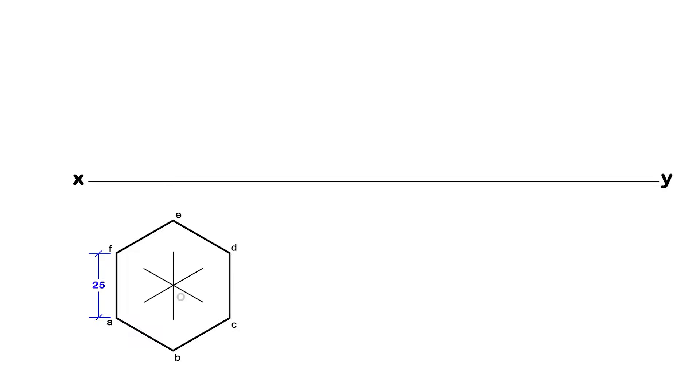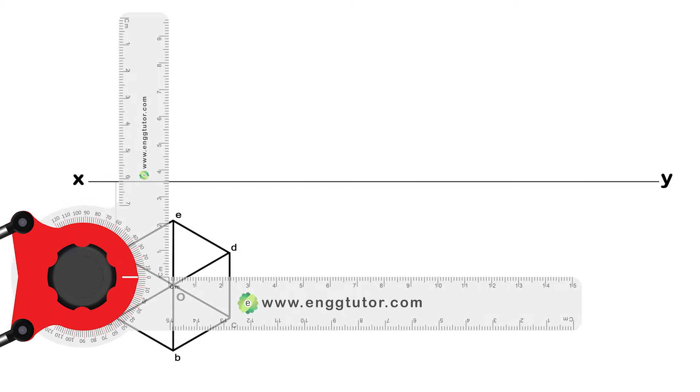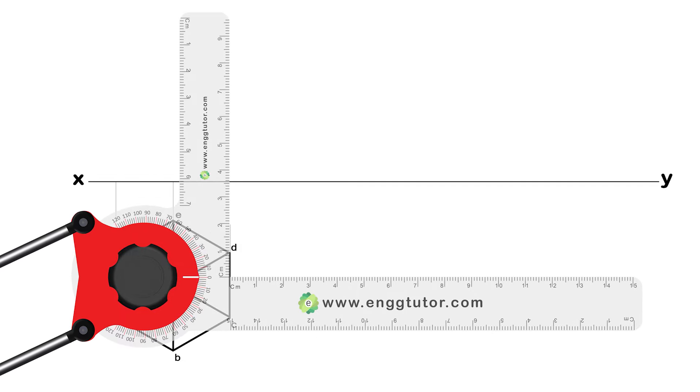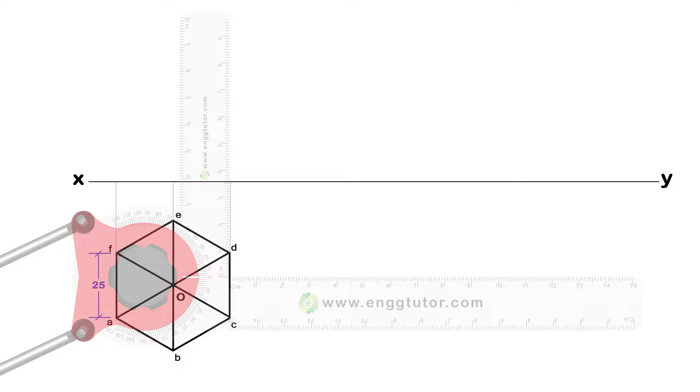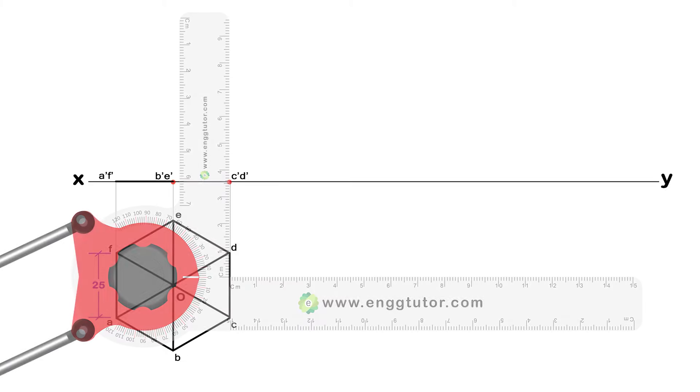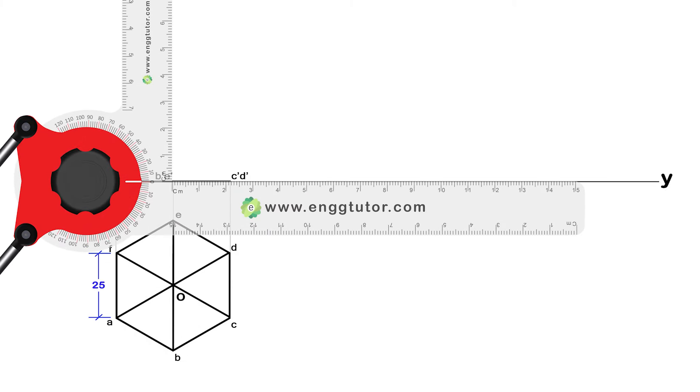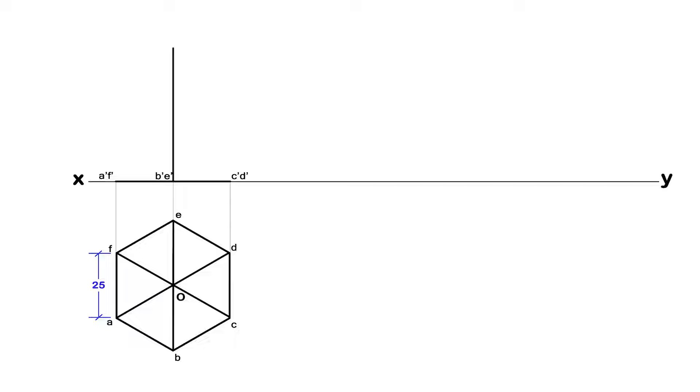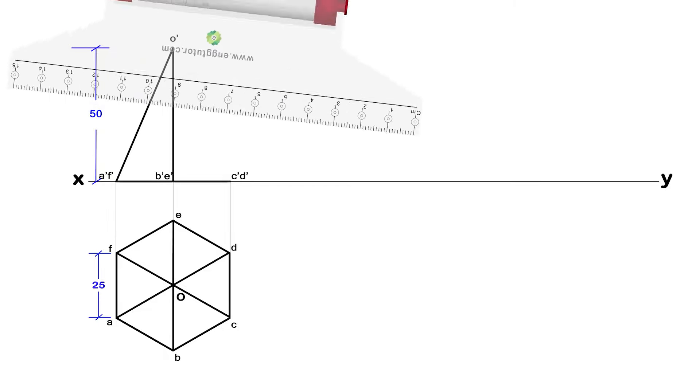Join the diagonals to represent the slant edges. Now draw the projections from every corner of the hexagon till the reference line and name the points in the front view as A dash, F dash, B dash, E dash, C dash, and D dash. Draw 50mm long axis above the reference line and name the apex as O dash. Complete the front view by joining all the corners to the apex.